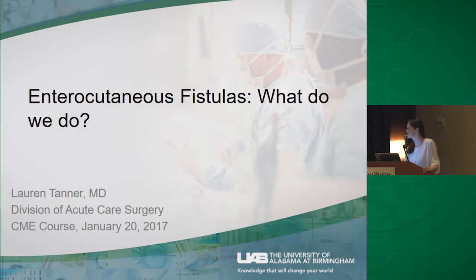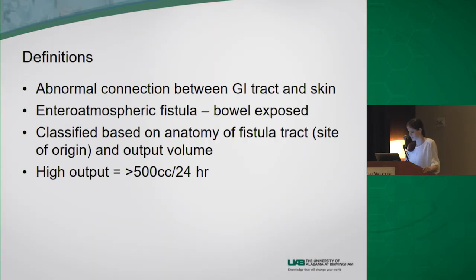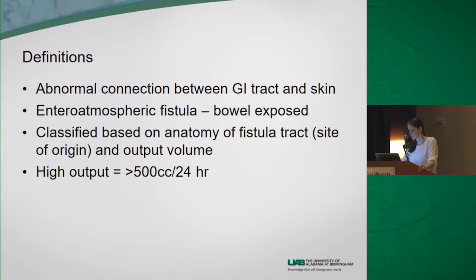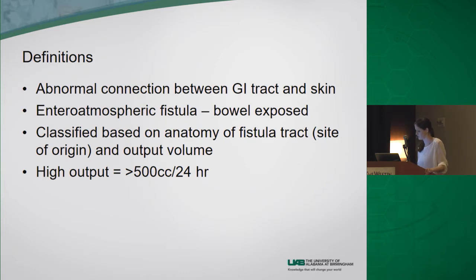Every general surgeon has seen and had to deal with one of these, either in training or in practice or both. An enterocutaneous fistula can be defined as an abnormal connection between the GI tract and skin. It can also be called an enteroatmospheric fistula, where the bowel is actually exposed. They are classified based on anatomy of the fistula tract, the site of origin, and the output volume. A high output fistula is generally greater than 500 cc over 24 hours, and those become more complicated to manage.